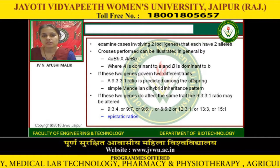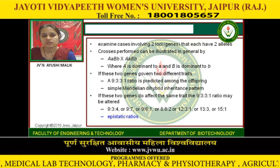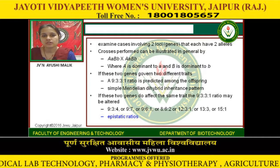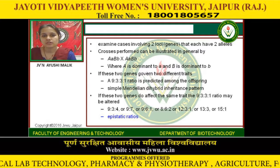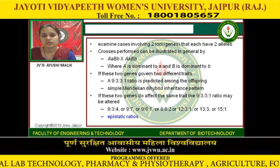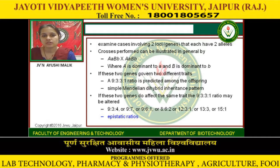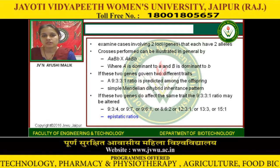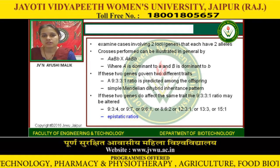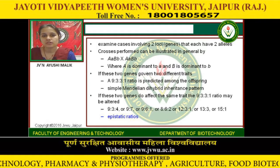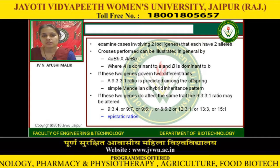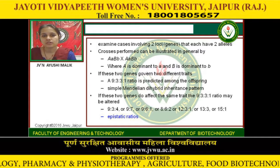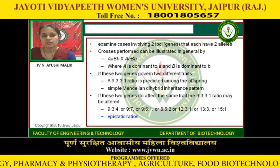If these two genes do affect the same trait, the 9:3:3:1 ratio may be altered to 9:3:4, or 9:7, or 9:6:1, or 8:6:2 (i.e., 4:3:1), or 12:3:1, or 13:3, or 15:1. These are the epistatic ratios.